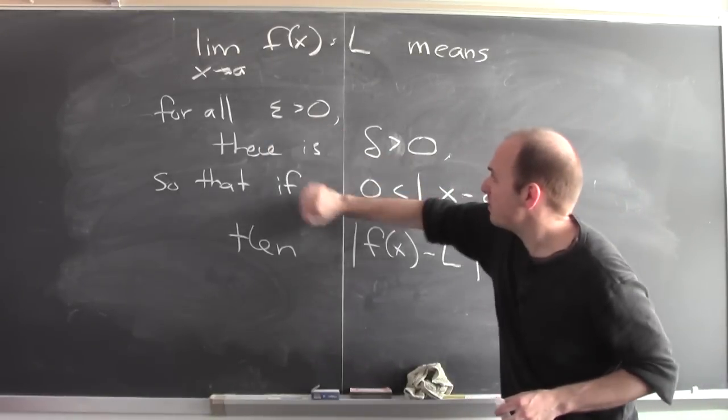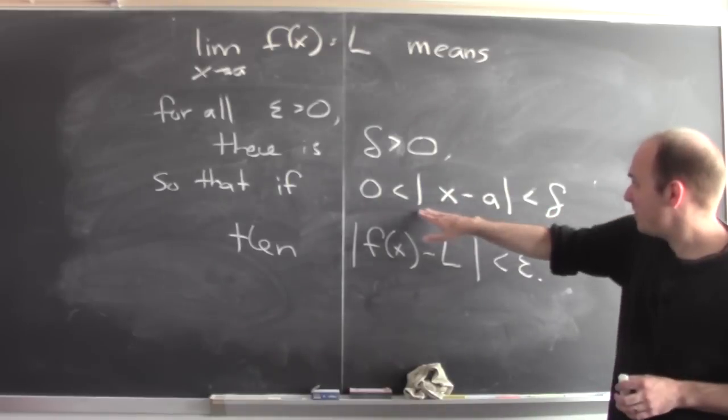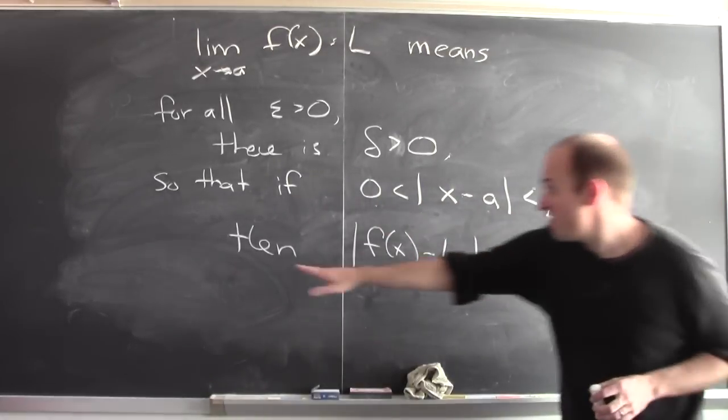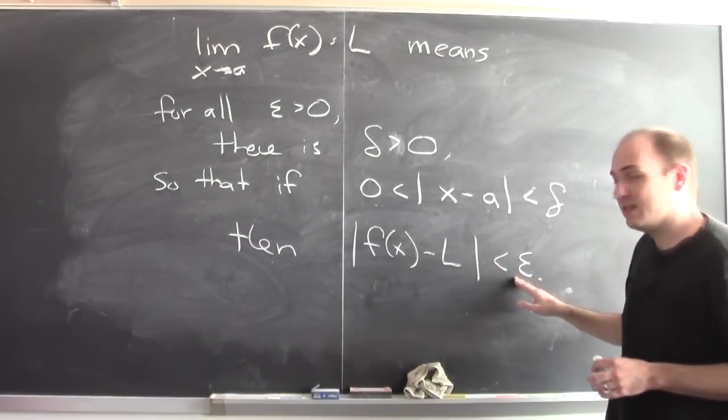So for all epsilon greater than 0, there's a delta greater than 0, so that if the absolute value of x minus a is between 0 and delta, then the absolute value of f of x minus L is less than epsilon.